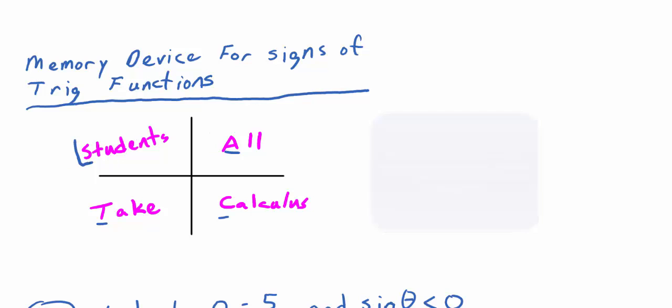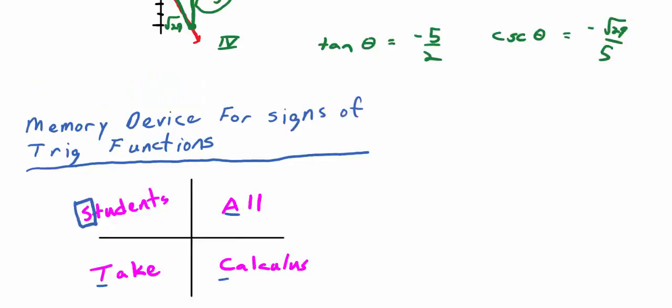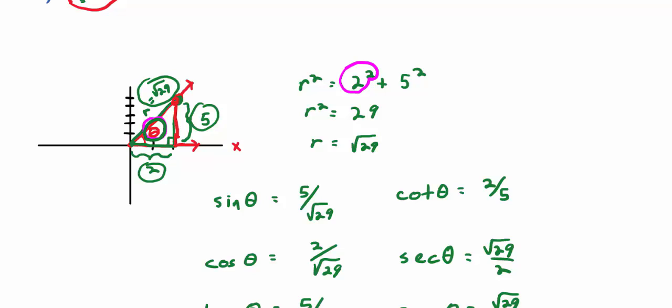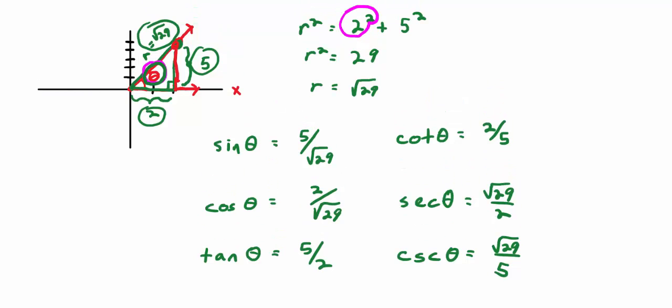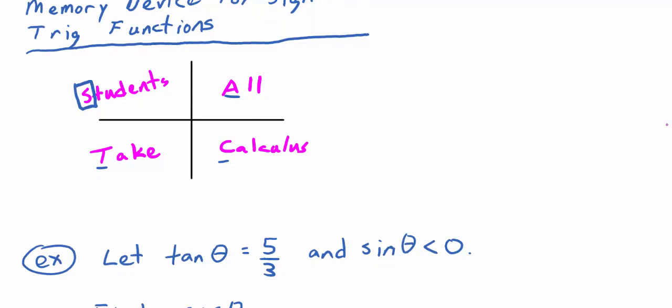The first letter of each word stands for a trig function that is positive in that quadrant. In quadrant two, 'S' stands for Sine — sine was still positive in the second quadrant. In quadrant three, 'T' stands for Tangent — tangent is positive. In quadrant four, 'C' stands for Cosine — cosine is positive. This extends to the reciprocals as well.